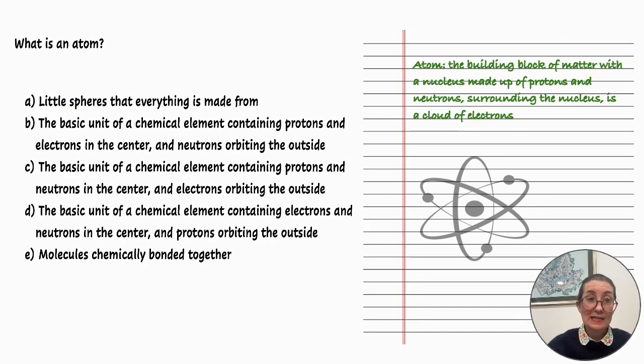Let's eliminate A and E right off the bat. A is not a scientific answer and E is a chemical bond. So now let's look at the remaining three and the actual definition of an atom. The atom is the building block of matter with a nucleus made up of protons and neutrons with electrons orbiting.